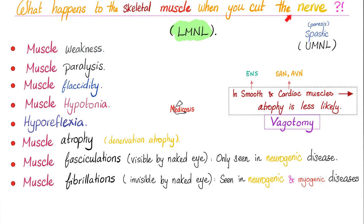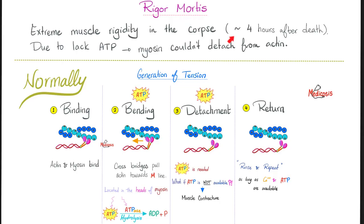If you cut the nerve supplying a muscle — a lower motor neuron lesion — you'll see muscle weakness, paralysis, flaccidity, hypotonia, hyperreflexia, atrophy, fasciculations, and fibrillations. Rigor mortis happens after death because you need ATP to detach myosin from actin. After death there is no ATP, so you cannot detach and become rigid. This rigidity is not muscle contraction — it is failure of muscle relaxation.